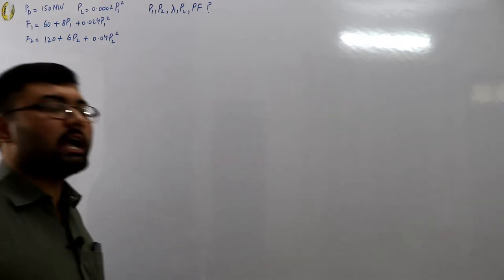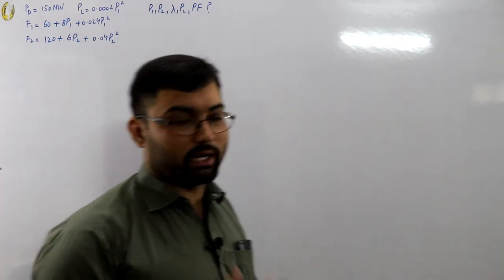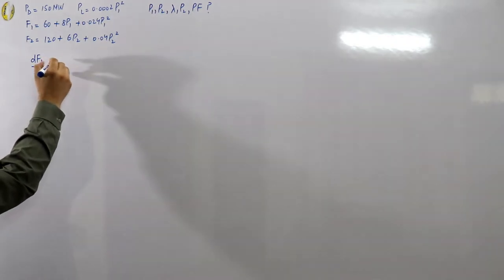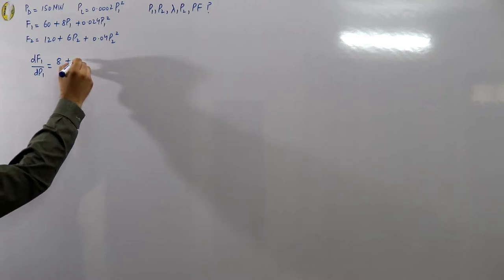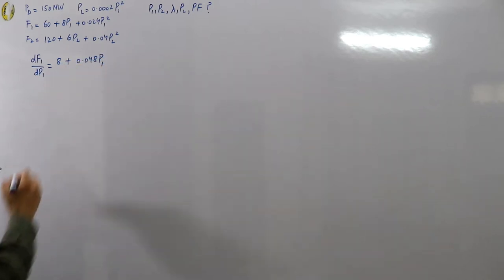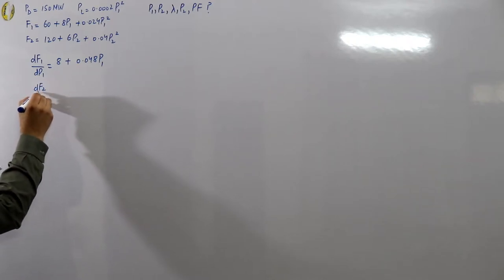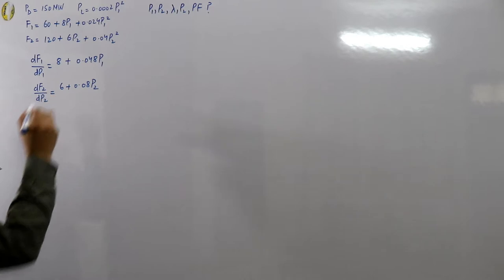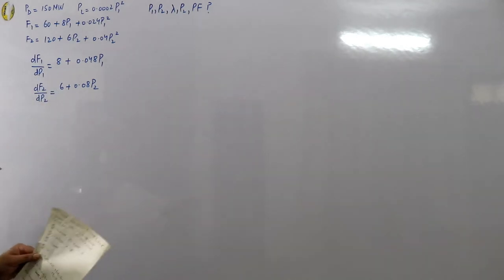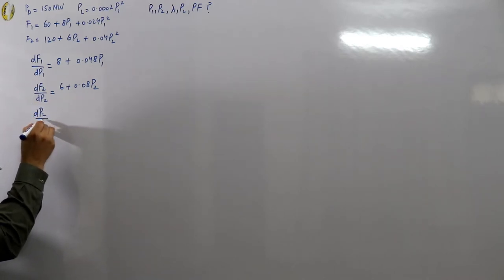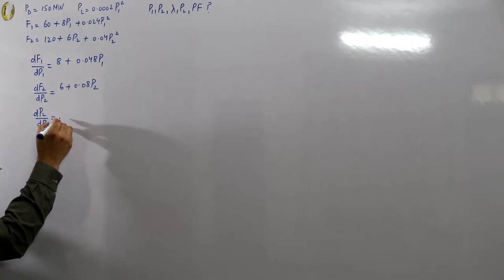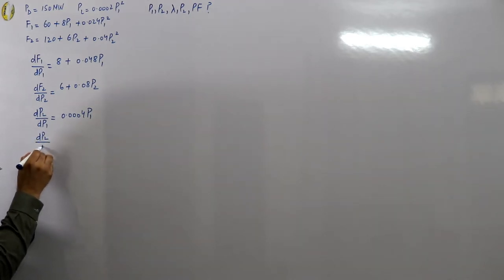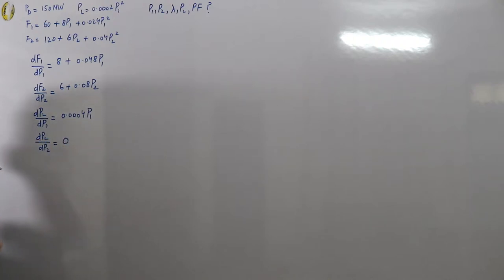The first step is to find the derivatives. The derivative dF1/dP1 = 8 + 0.048 P1. Similarly, the derivative dF2/dP2 = 6 + 0.08 P2. The derivative of power loss dPL/dP1 = 0.0004 P1. Since power loss is not associated with station 2, dPL/dP2 = 0.